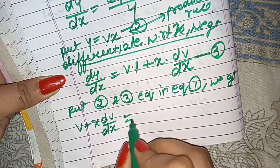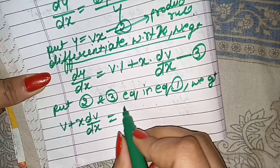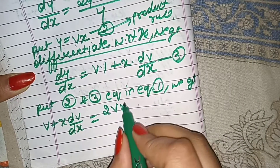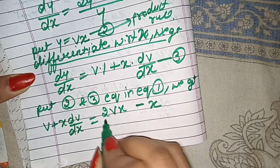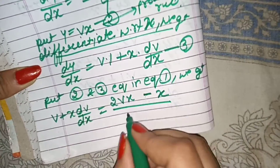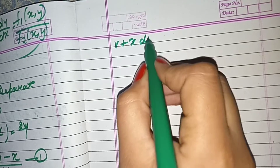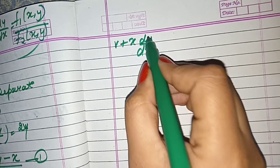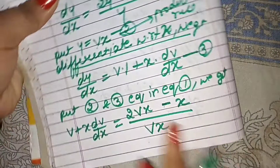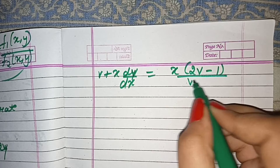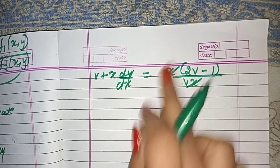So we substitute: v plus x dv over dx equals 2y minus x, all over y. Since y equals vx, this becomes 2vx minus x, all over vx. Now we solve this — on the right-hand side, we take x common.